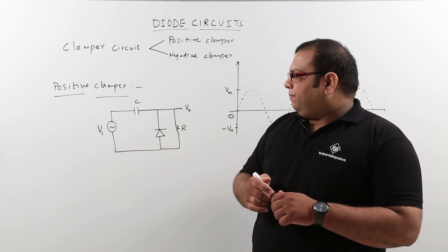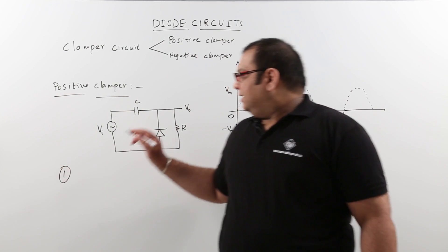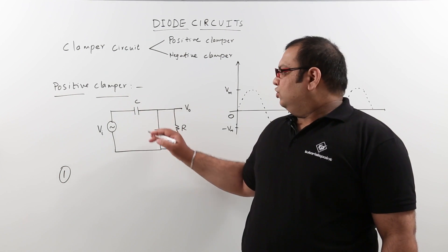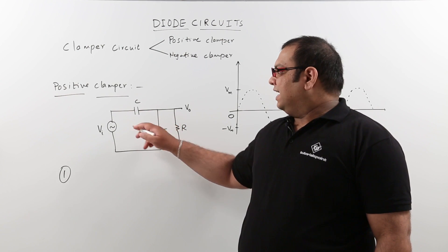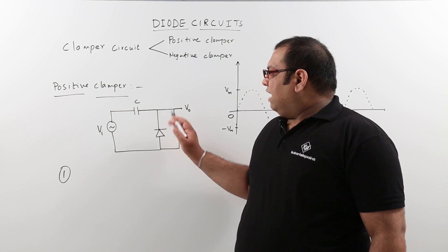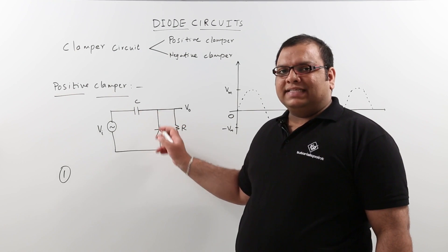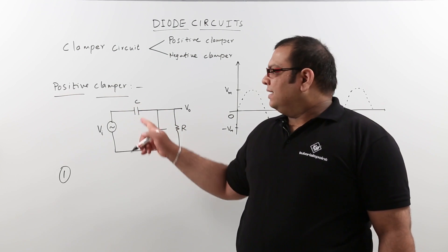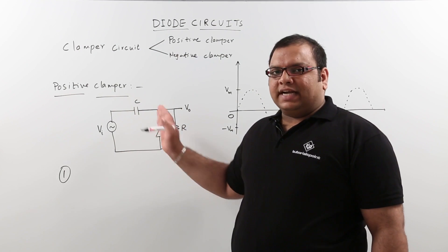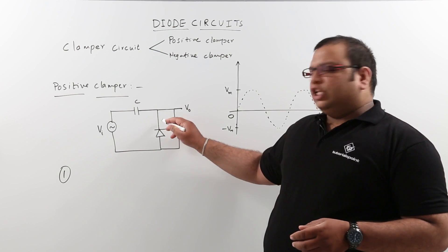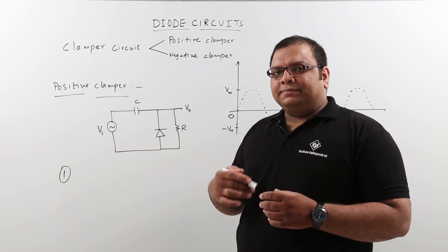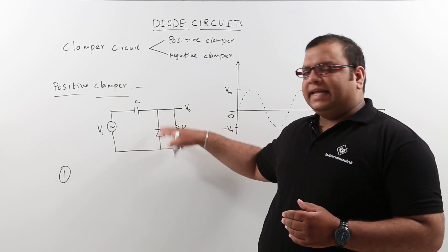To analyze the circuit, the first step is to find the maximum voltage to which the capacitor will get charged. The capacitor will get charged when the diode is conducting, because when the diode is conducting, the resistance will be 0, so RC is 0. When RC is 0, the capacitor will charge instantly to that voltage. We need to see when the diode is conducting according to its polarity — when we get the negative half cycle, the diode will conduct.